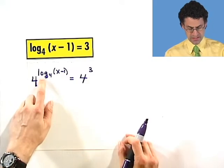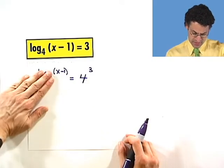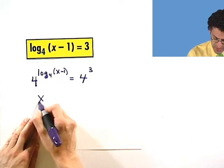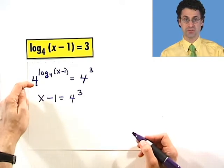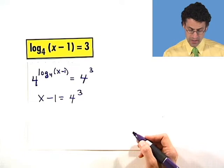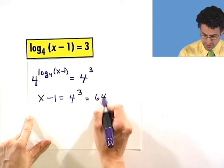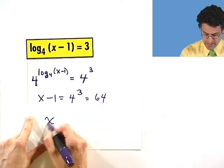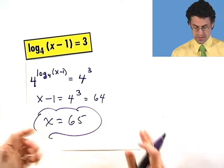Well, now 4 raised to the log base 4 of this, these log and exponents cancel. And so I'm just left with x minus 1 equals 4 cubed. And that's the power of using the exponential function to undo the log function. Now I've got the x where I want it. And so what's 4 cubed? Well, that's 64. And so what's x? If I add 1 to both sides, I see x equals 65. Once we see the secret, finding the value for x, piece of cake. Let's try another one.